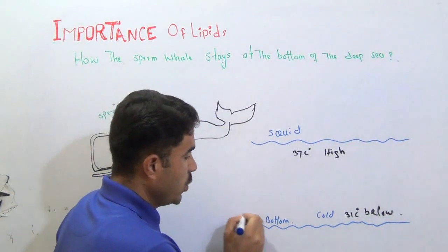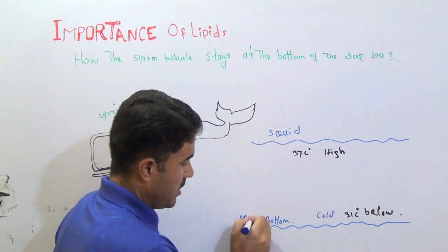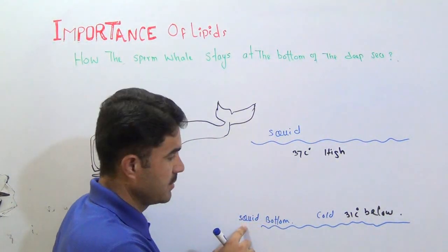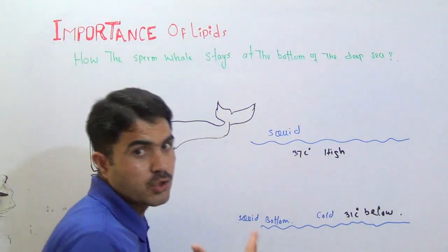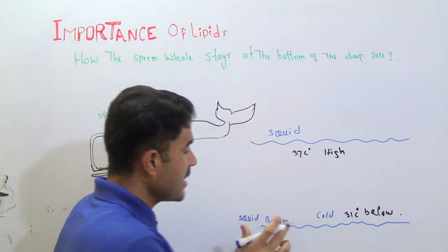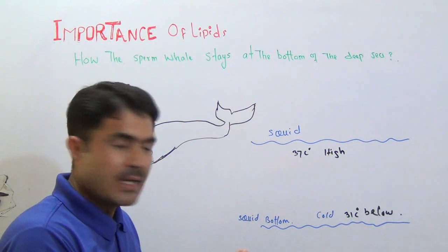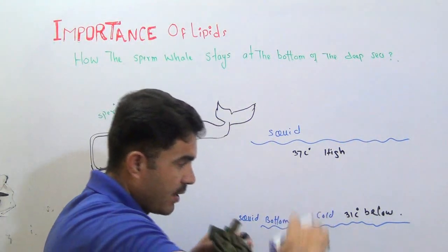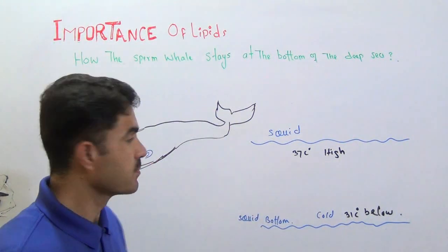And the squids, which are small animals, that is the food of the whale, squid. Squids are found in that region, at the bottom region.